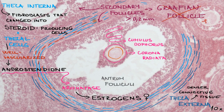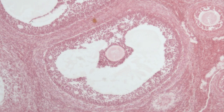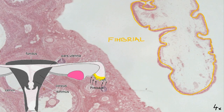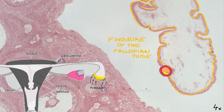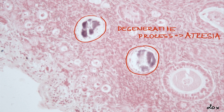We cannot see a Graafian follicle in this section. There is one more structure visible: the fimbriae of the fallopian tube, which capture the oocyte after it escapes from the ovary. Only a certain number of follicles undergo the process of development up to the point of ovulation; most ovarian follicles undergo the degenerative process called atresia. We can see some follicles undergoing atresia here.